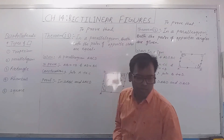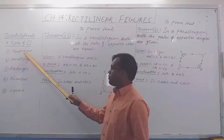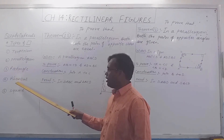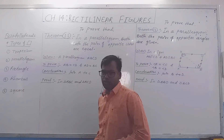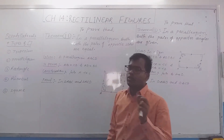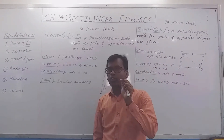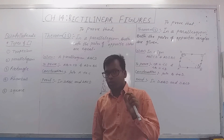The types of quadrilaterals are: first, the trapezium; parallelogram; rectangle; rhombus; and square. Please try to recall them once again through your book.